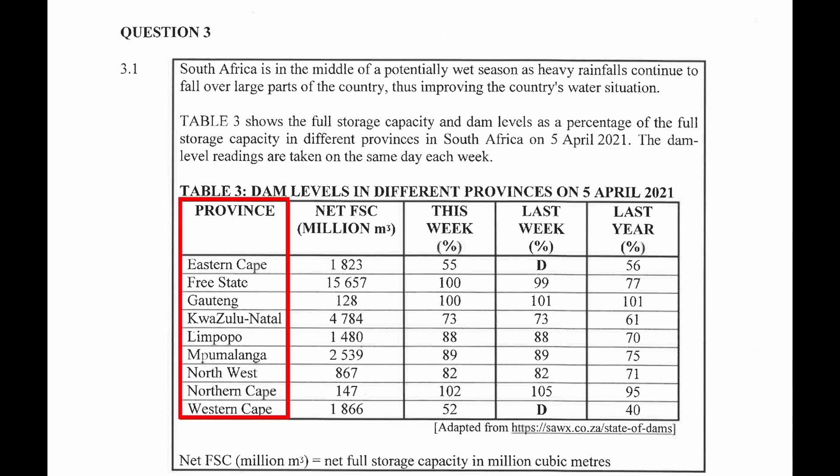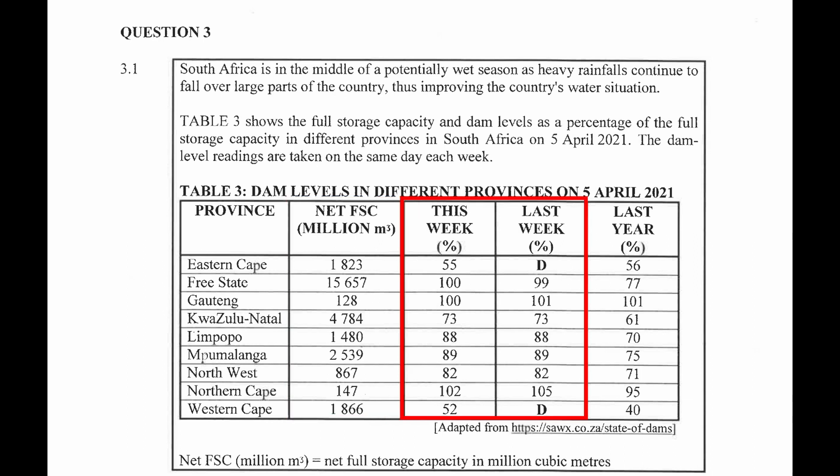Table 3 has been divided into five columns. The first column lists the nine provinces of South Africa. The second column lists the net FSC in million cubic meters of each province — note that net FSC equals the net full storage capacity, representing the maximum amount of water each dam can hold. In the third and fourth columns we are given the amount of water as a percentage of the net full storage capacity for this week and last week.